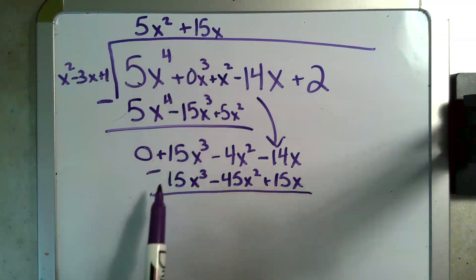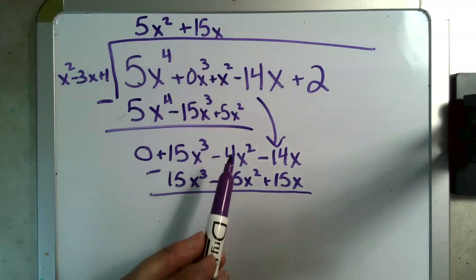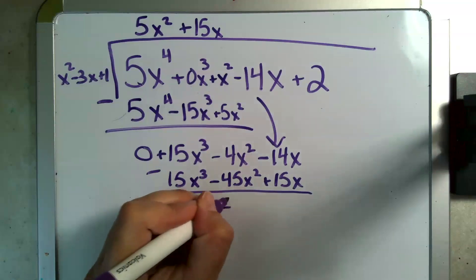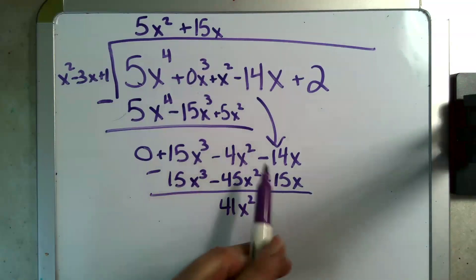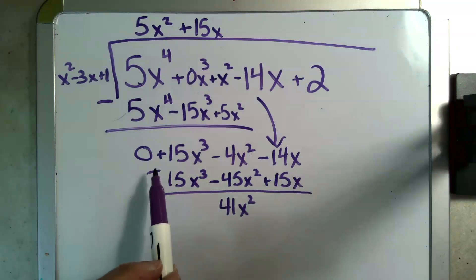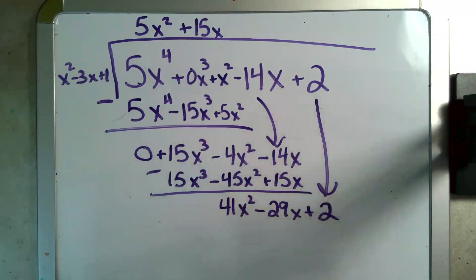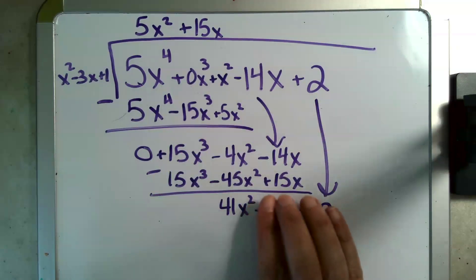15x to the third minus 15x to the third, there's that zero we were looking for. Minus 4x squared minus minus 45x squared, in other words plus 45x squared, gets me a very awkward 41x squared. Minus 14x minus another 15x is minus 29x. And finally I bring my last term down. I do it one more time.